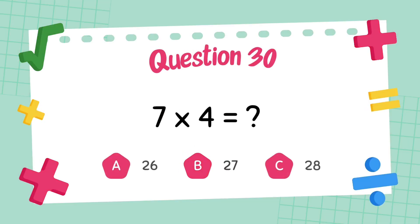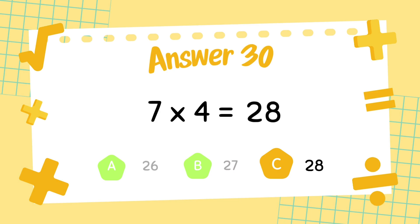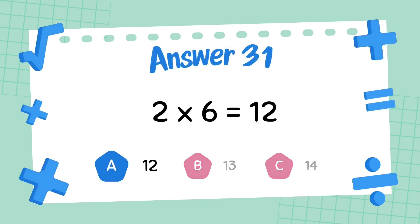What is 7 multiply 4? The answer is 28. What is 2 multiply 6? The answer is 12.